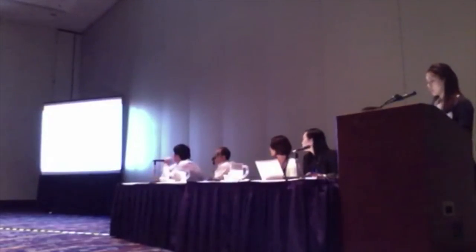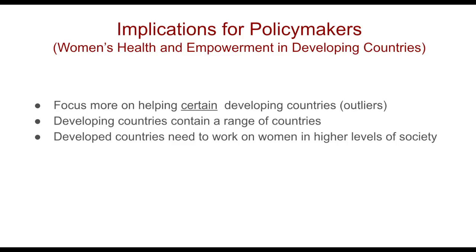The data for maternal mortality, girls in secondary education, and women in parliament was initially used to try to explain trends in developing countries. However, I found the data also useful for developed countries and how evidence-based policy thinking could become more effective. First, within every indicator, there were a couple of countries that were statistical outliers — these were the ones bringing down the world average and would have to be focused on more than others in the future.